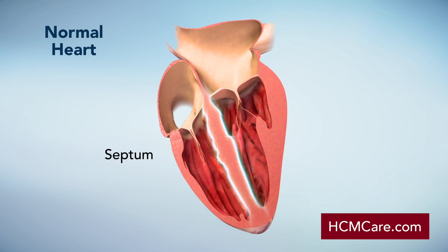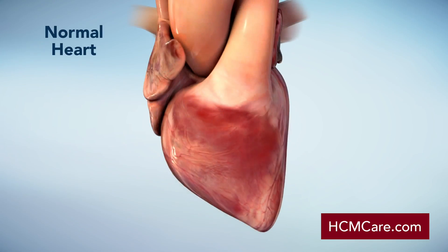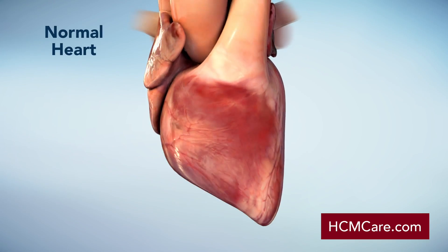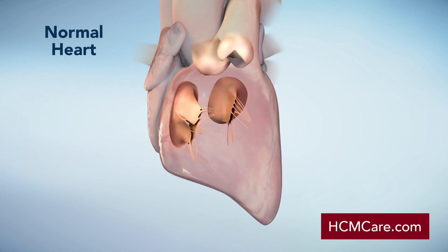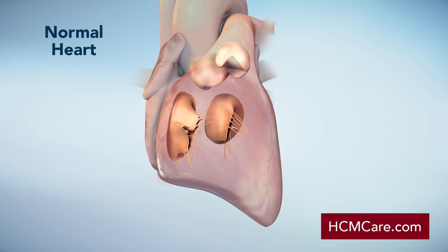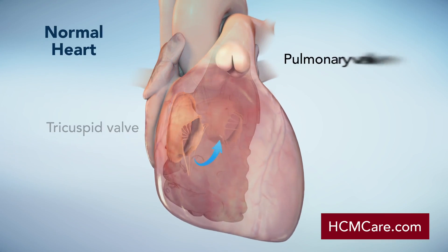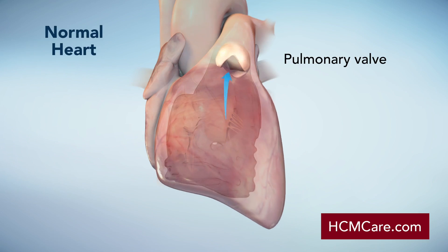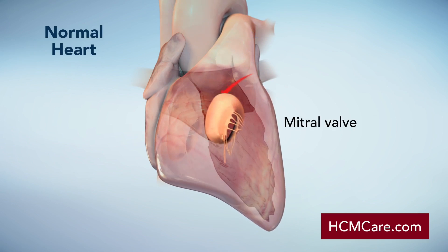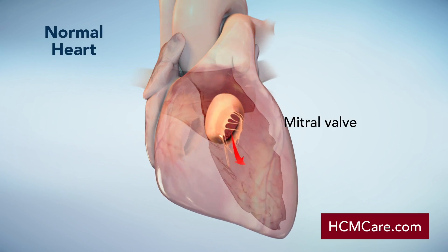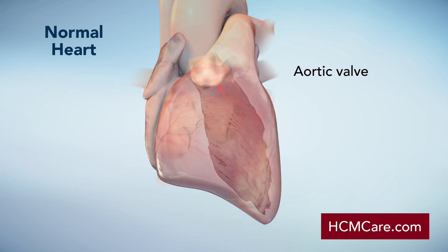A muscular wall called the septum divides the two sides of your heart. Your heart pumps blood in one direction through four valves: the tricuspid valve, pulmonary valve, mitral valve, and aortic valve.